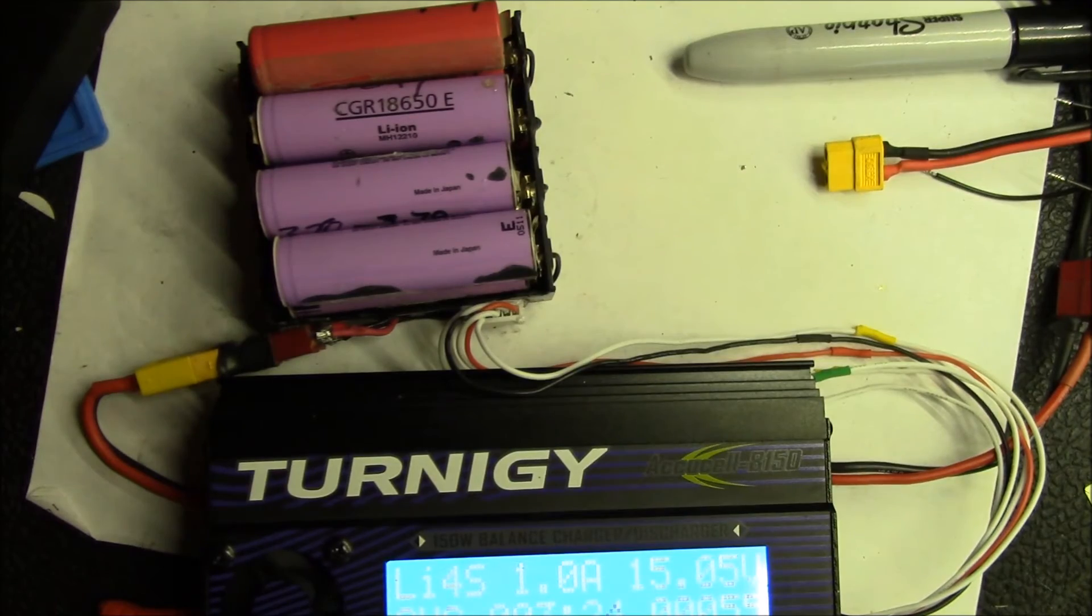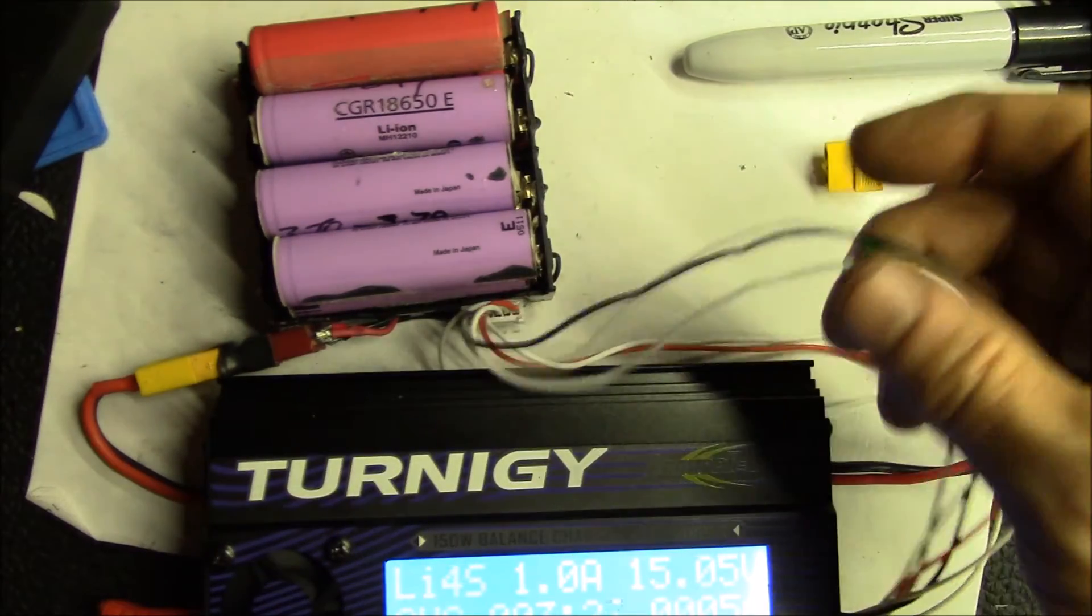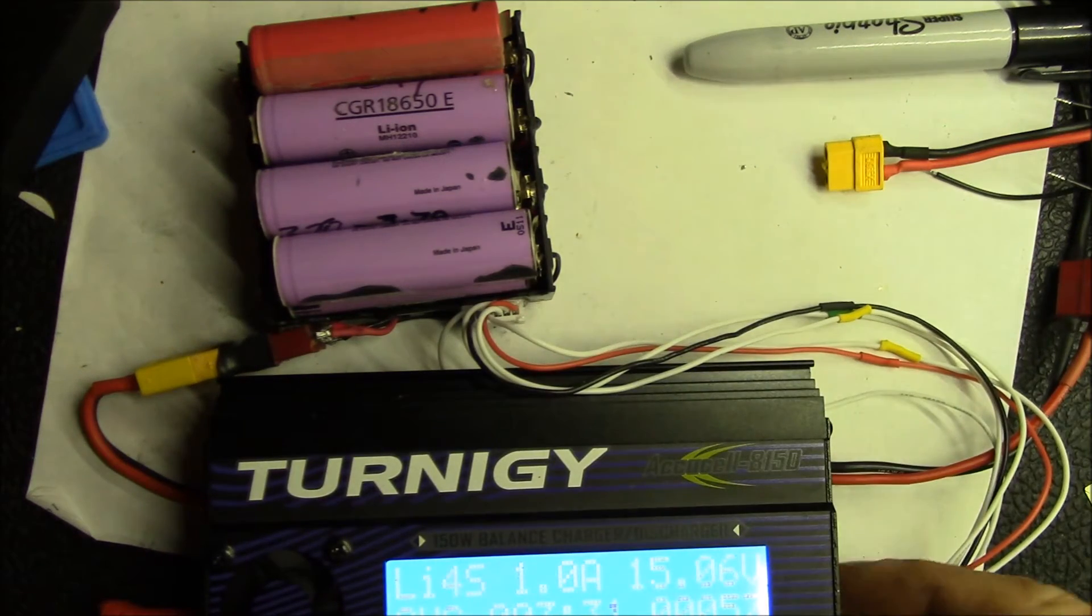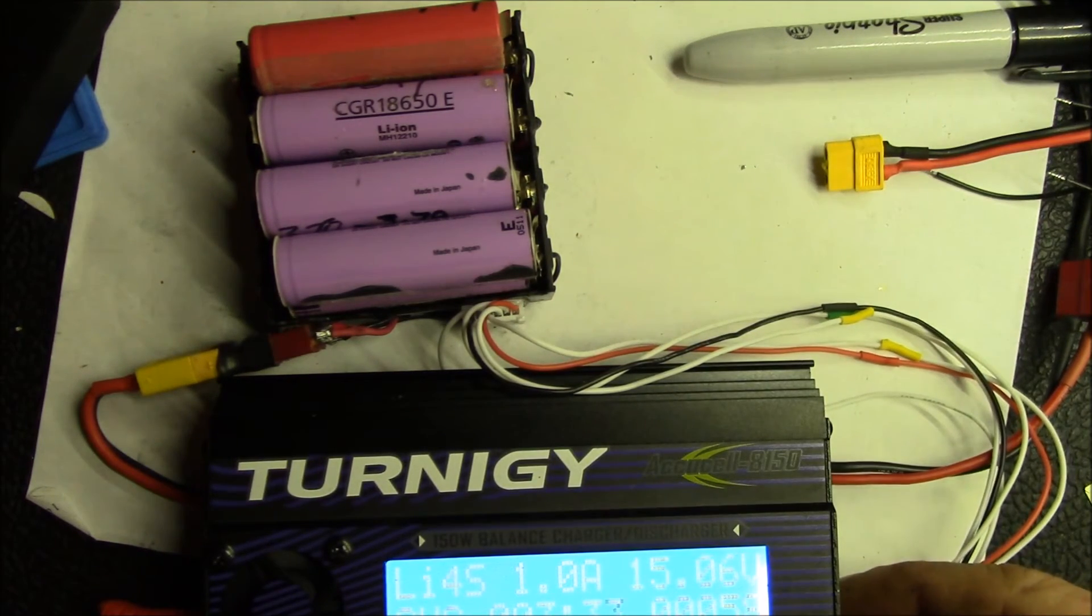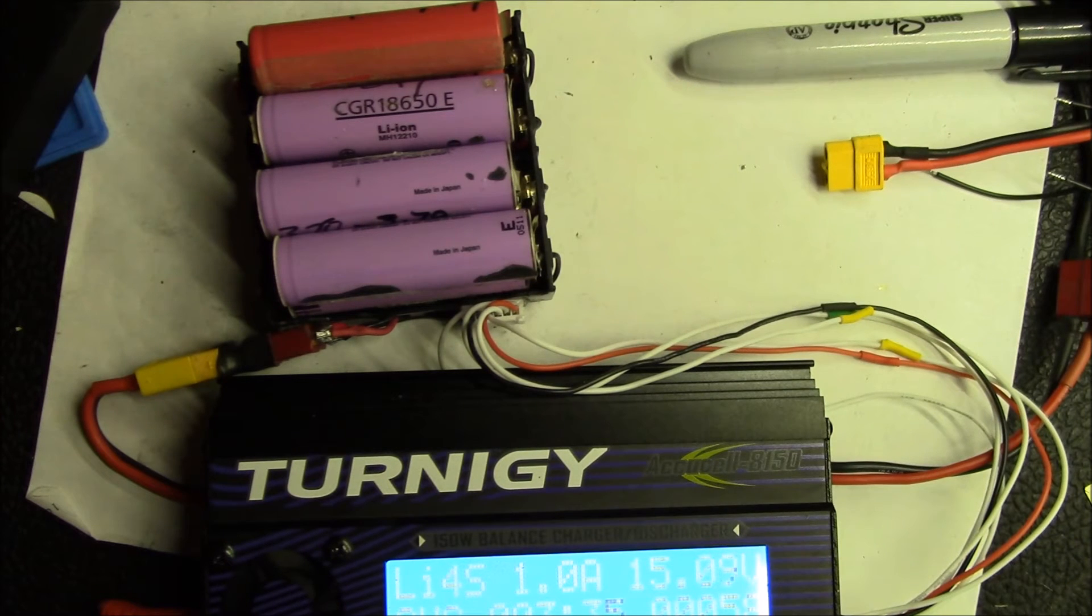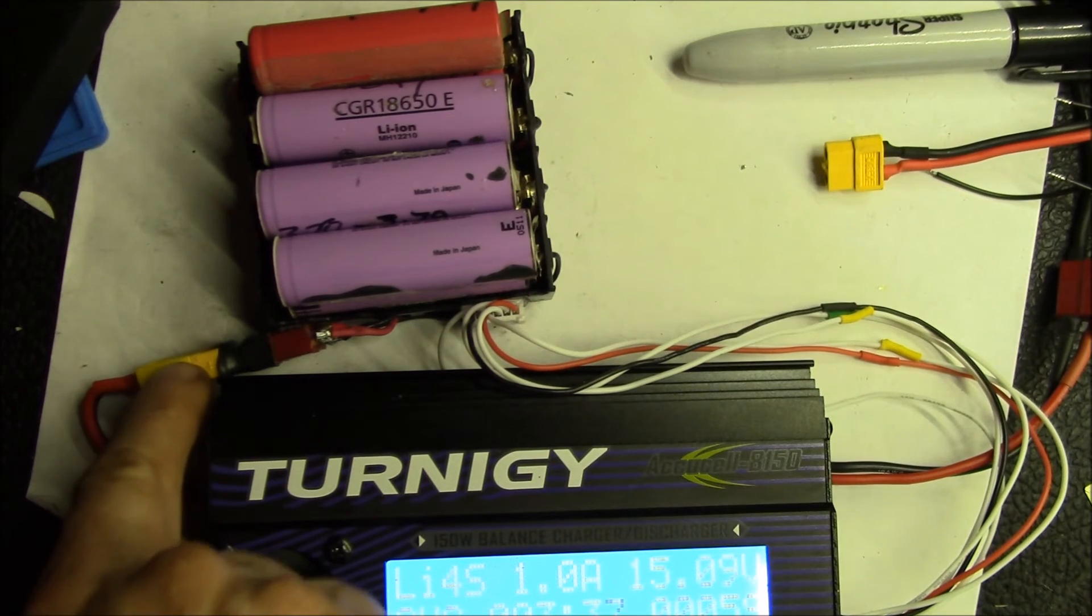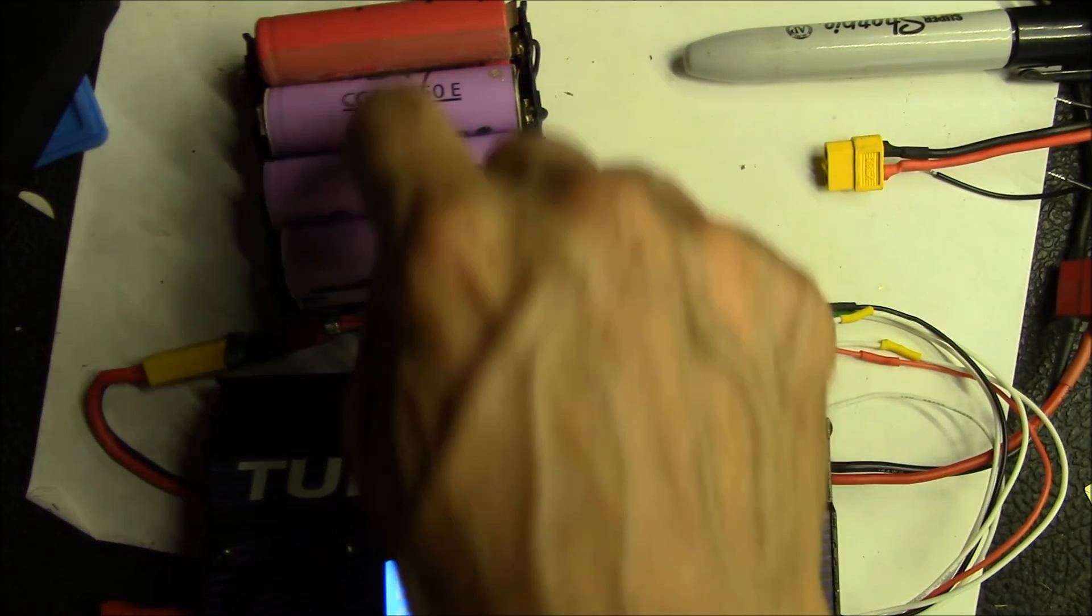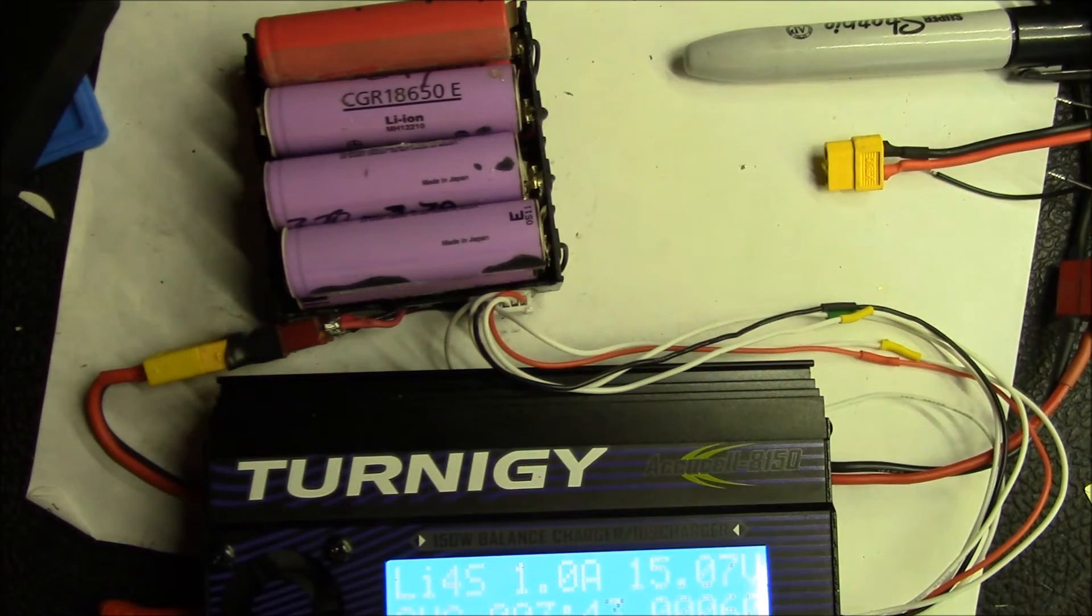So you can see I have the balance cable over here coming out of the battery pack, running into the back of the charger. And then I have my charging output going to the Dean's plug. And then I can just plug in four batteries there. You can see it's got all four voltages there, different voltages on the battery.